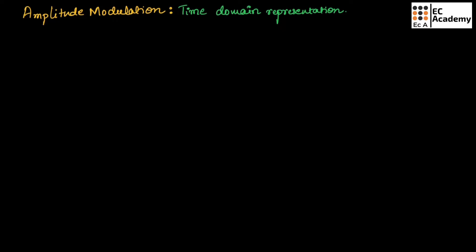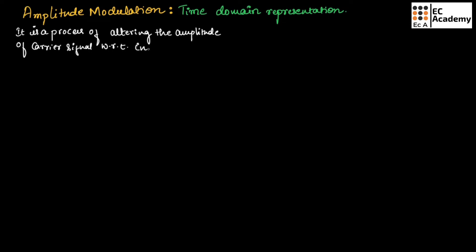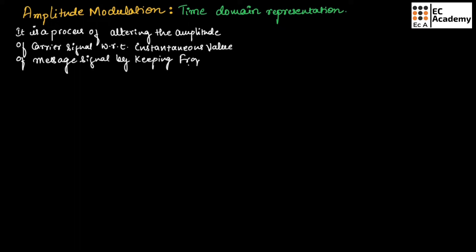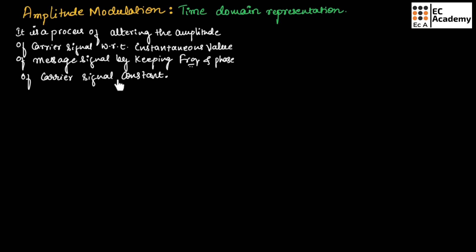Let us define amplitude modulation. Amplitude modulation is a process of altering the amplitude of a carrier signal with respect to the instantaneous value of the message signal, by keeping the frequency and phase of the carrier signal constant. Here we are taking a carrier signal, varying its amplitude with respect to the message signal, and keeping frequency and phase constant.